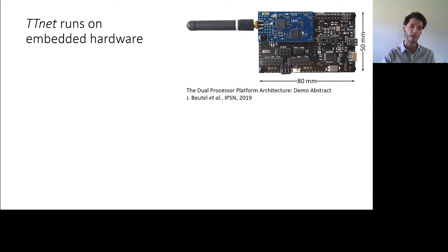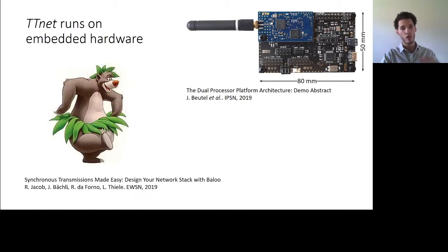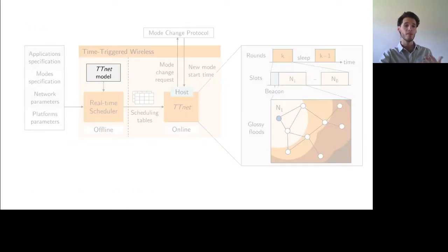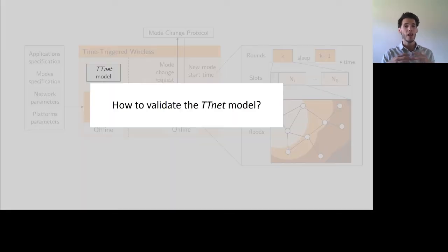As I mentioned in the introduction, we have implemented TTNet on real embedded hardware. We've used for that a software framework called Baloo, which, among other things, provides us with a very precise model of the execution time of the rounds. So that is exactly the model that I was referring to earlier. Now the question is, how do we actually validate this model? In particular, how do we validate that the worst case execution time of our messages will indeed be smaller than the value given by the model? Which is generally not something easy to validate experimentally.